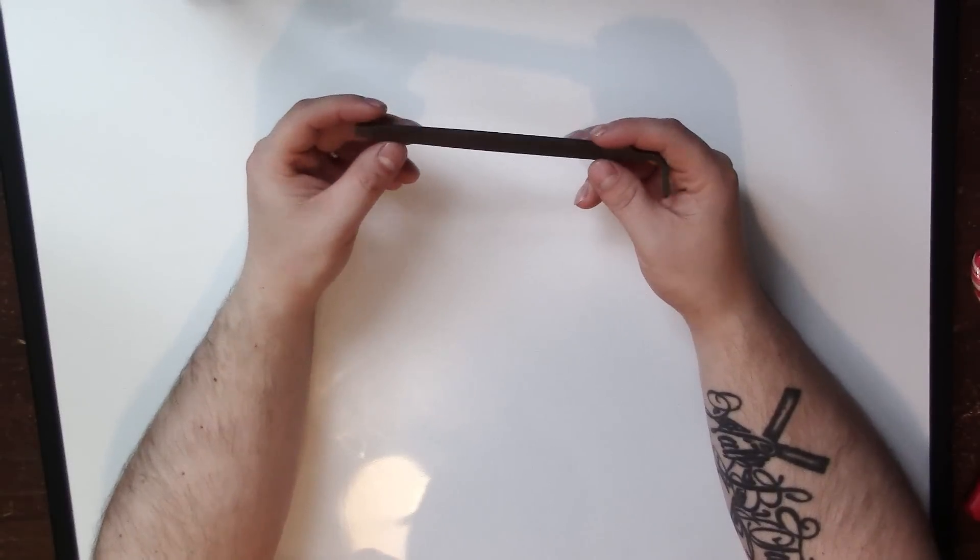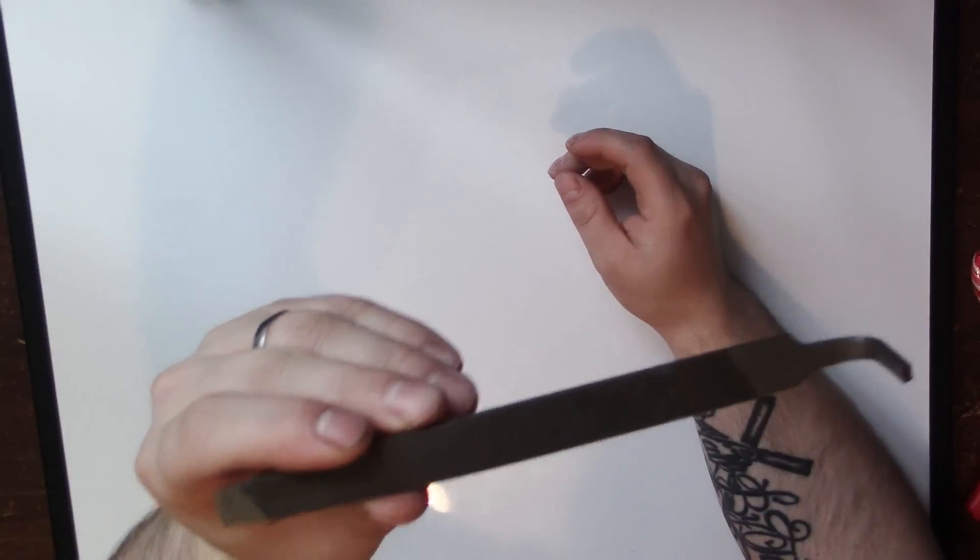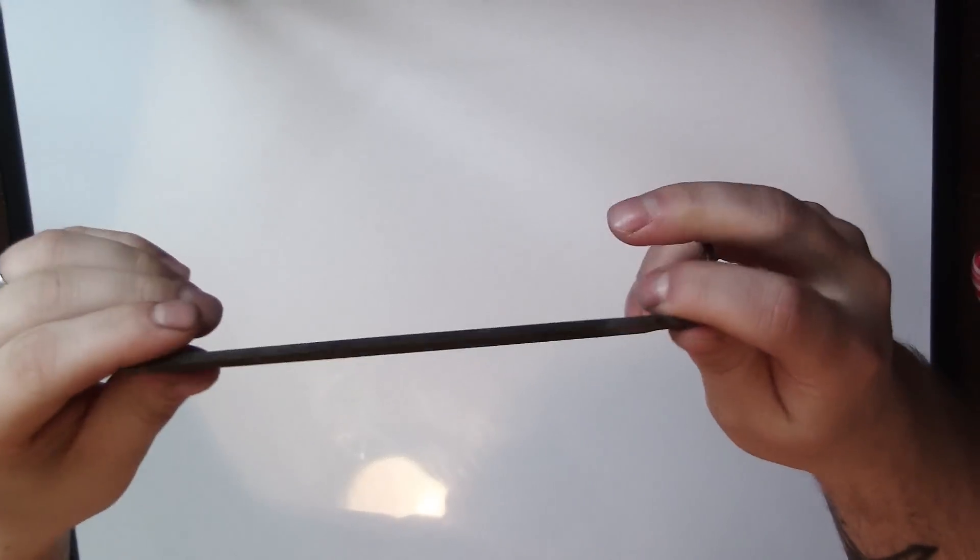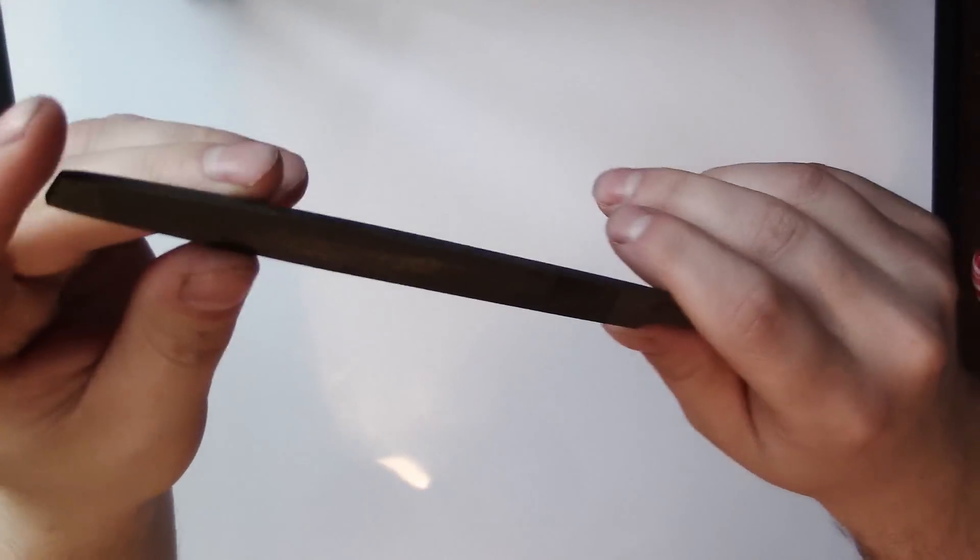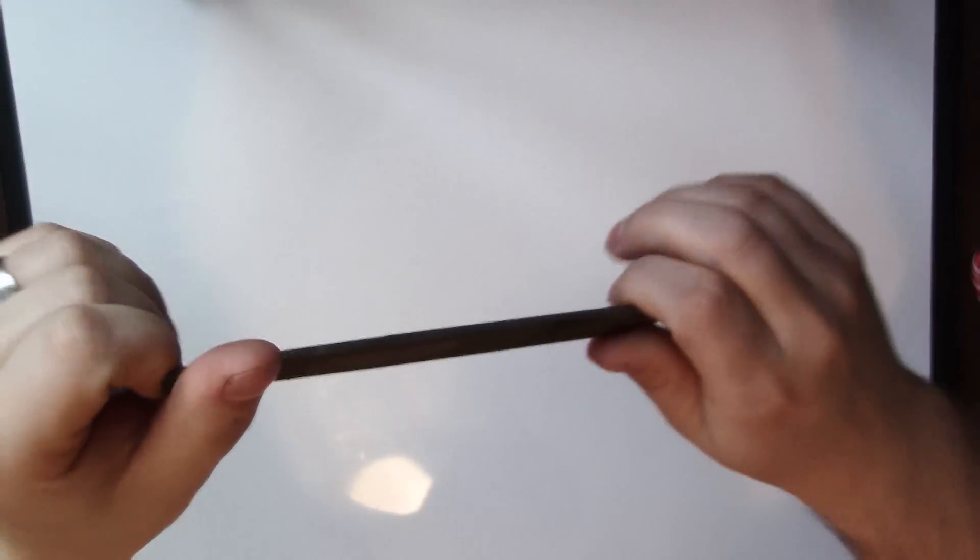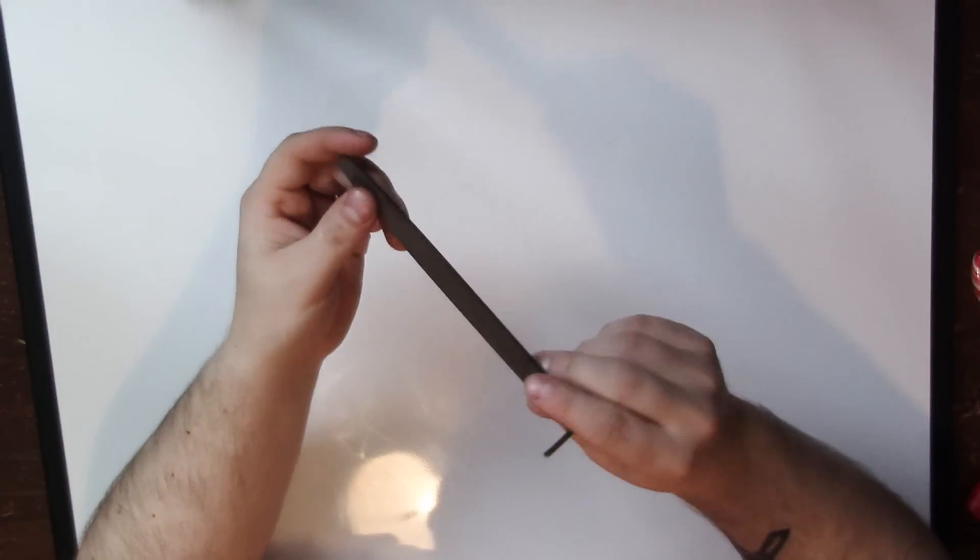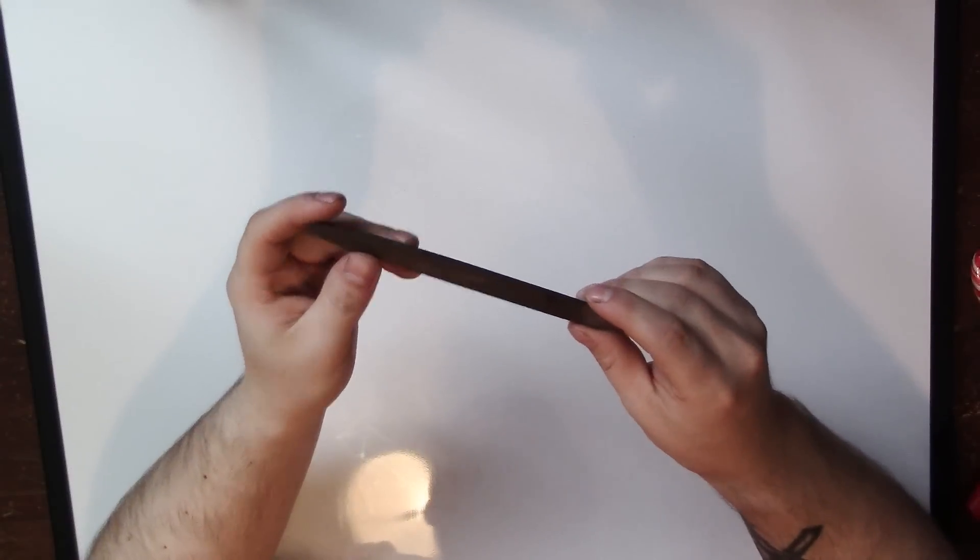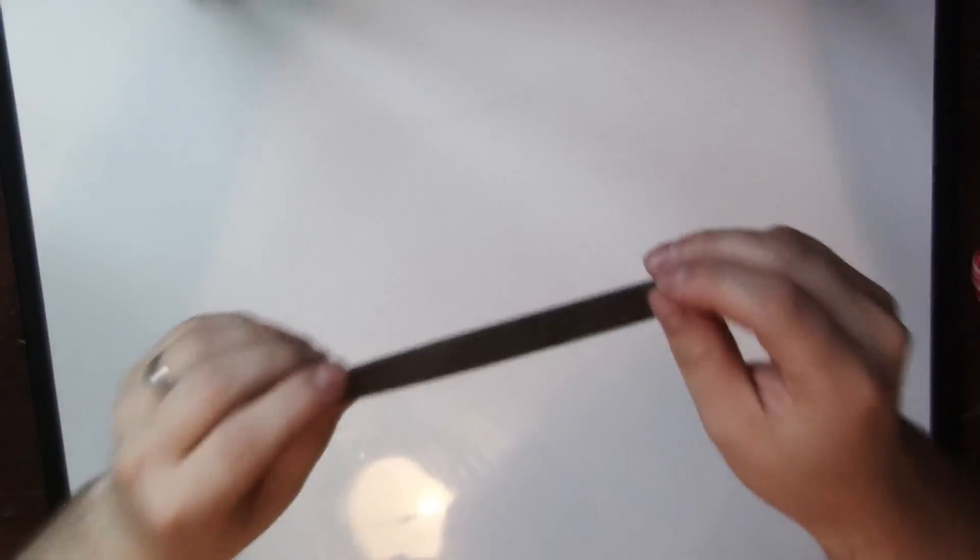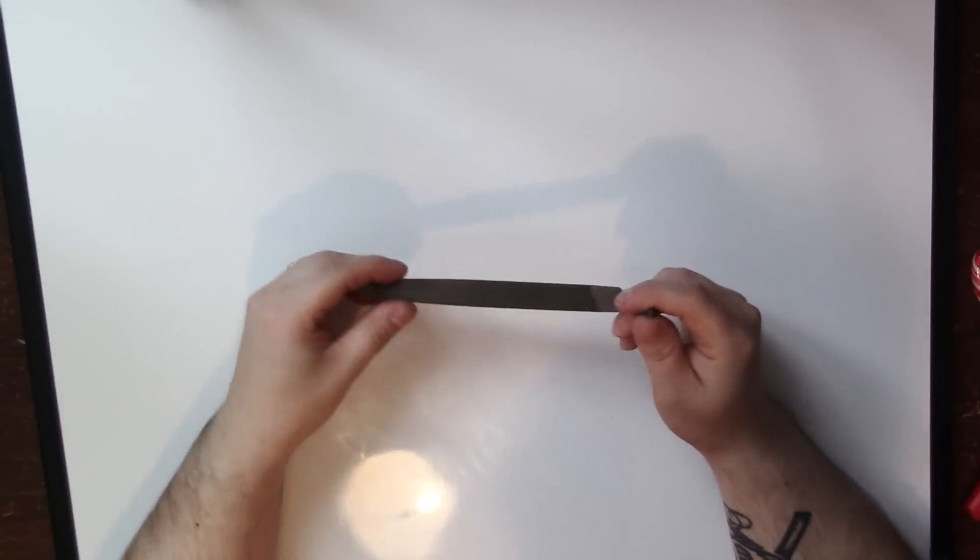Ultimately your sharpening kit can consist of one bastard file. If you want to get a nice keen edge on a knife, this will give you one. This will give you a working edge, no problem, free of chips and dents. You can get a half decent edge on a knife with a good file like this.